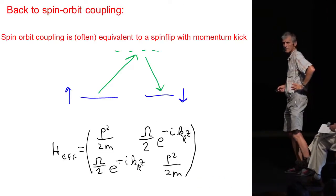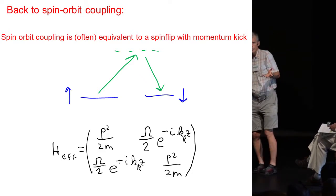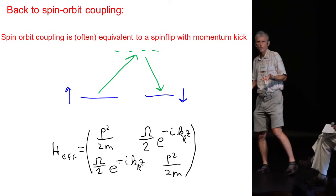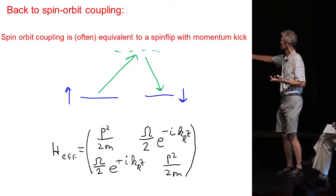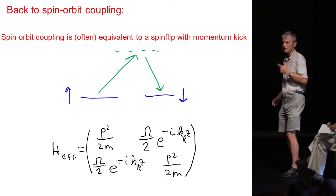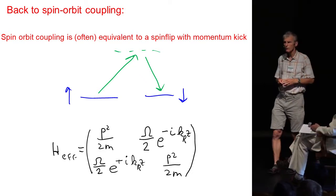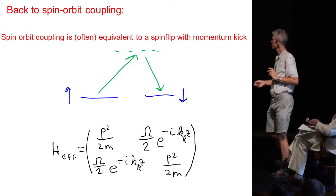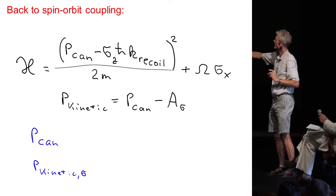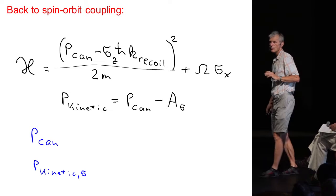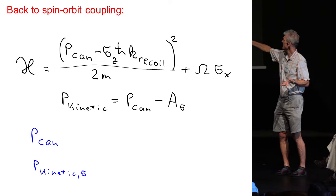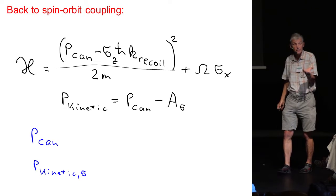So, let me come back to spin orbit coupling. What I've shown you is that we have Floquet engineered an RF photon. It has now recoil. So, therefore, it is equivalent to this spin flip transition, which until now was implemented with a two-photon Raman transition. If you do a canonical transformation of this Hamiltonian, it can be written in this way, and this is the way how we have often written down the Hamiltonian for spin orbit coupling. And what you see here is it has the form P minus A. So, there is a spin-dependent gauge potential.